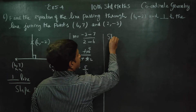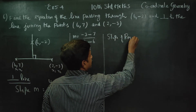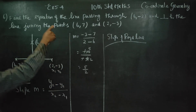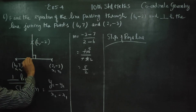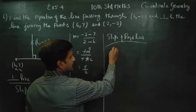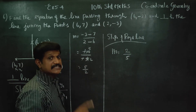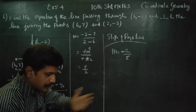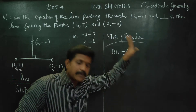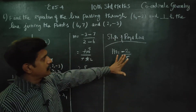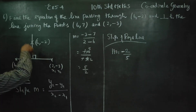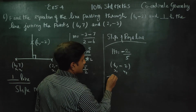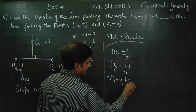So the slope of our required line: since the lines are perpendicular, we take the negative reciprocal. The slope of the required line is 2 by 5. The required line passes through the point (6, -2), where x1 = 6 and y1 = -2.